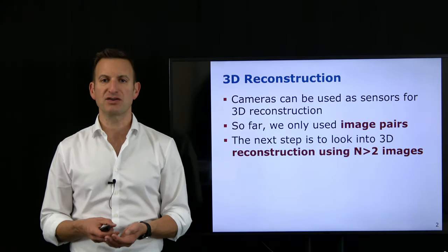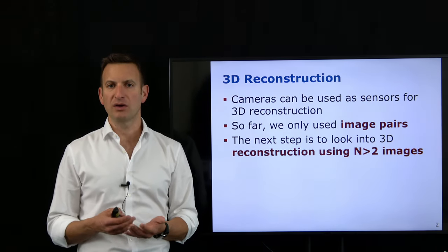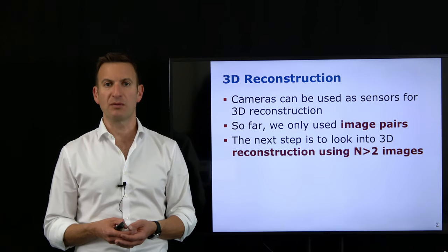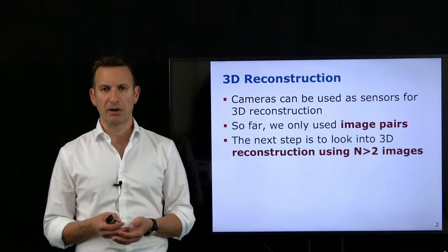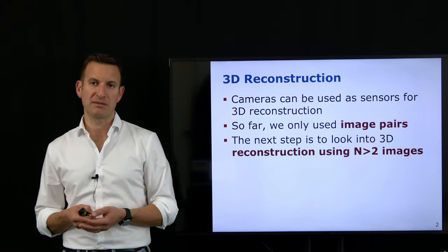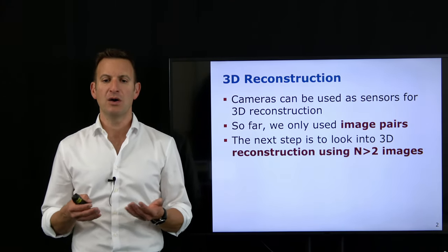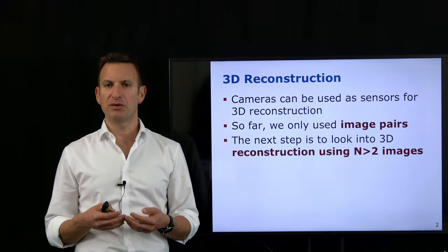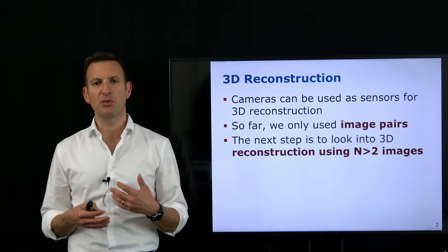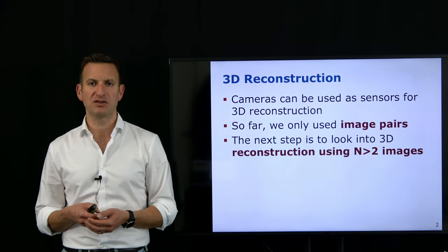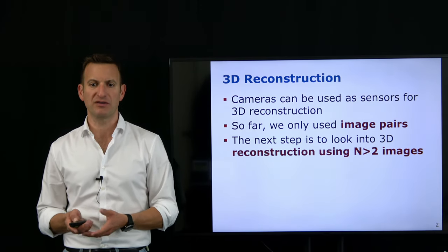3D reconstruction is a relevant task in many applications. Today we look at how we can do this from image data, so that we don't have a range sensor such as a laser rangefinder, but only work on camera images — a large set of camera images — to perform the 3D reconstruction. In the lecture so far we looked into camera pairs; today we want to extend it to an unlimited number of images: n greater than two.